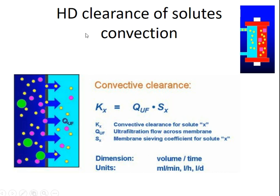When measuring hemodialysis clearance by convection, since convection depends on the ultrafiltration rate, we incorporate Quf (ultrafiltration flow rate). Convective clearance depends on both the ultrafiltration flow rate across the membrane and the membrane sieving coefficient for a given solute.